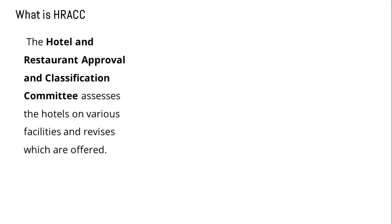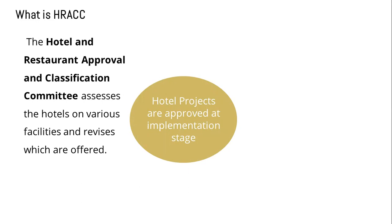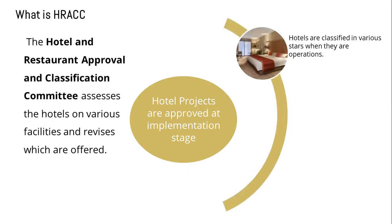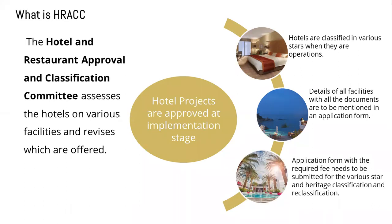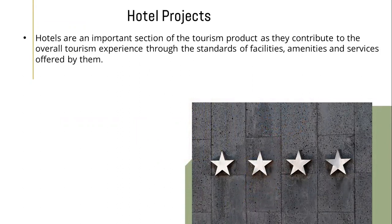Let's quickly revise what HRACC does. The Hotel and Restaurant Approval and Classification Committee assesses hotels on various facilities and services offered. Hotel projects are approved at the implementation stage but they are classified in various stars only when they are operational. Details of all the facilities with all the documents are to be mentioned in an application form. Hotels are an important section of the tourism product as they contribute to the overall tourism experience through the standards of facilities, amenities and services.